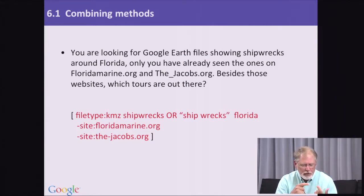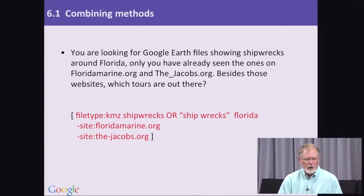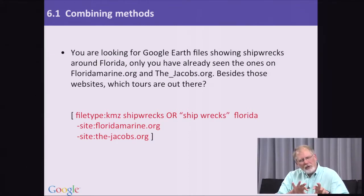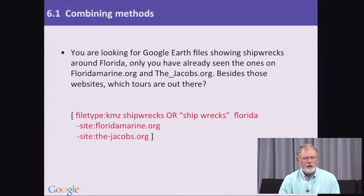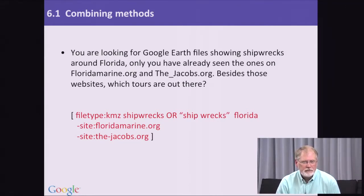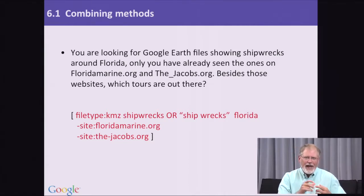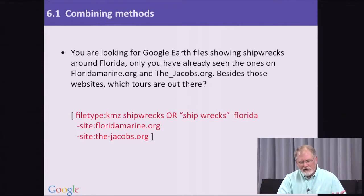Then I would add 'shipwrecks' — because remember, what we're trying to do is find Google Earth KMZ files that have shipwrecks around Florida. But we've already got some from floridamarine.org and jacobs.org, so now we want to exclude those. You know how to do that: that's the minus site operator. So I would basically build this up in pieces, and then I might add something like the OR you see in the middle — 'shipwreck OR shipwrecks' — or a quoted phrase.